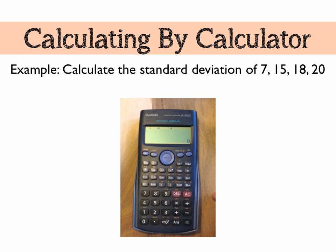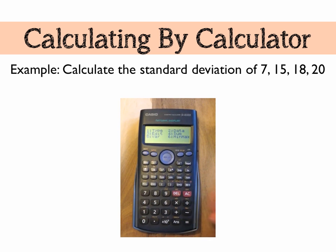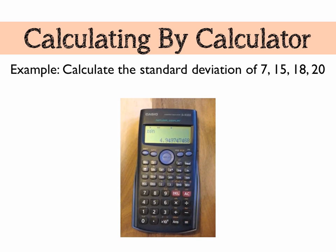We're then going to go into the stats menu, pressing shift and 1, and we're going to choose variance, which in this case is number five. Then number three is the standard deviation of our sample, and we're going to press equals, and there is our standard deviation.